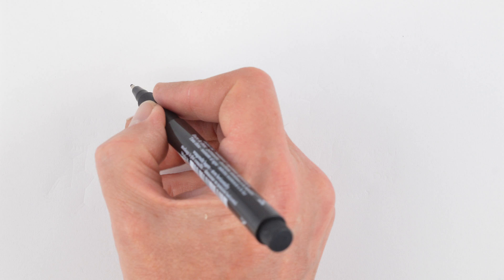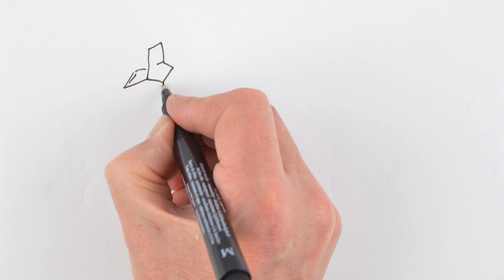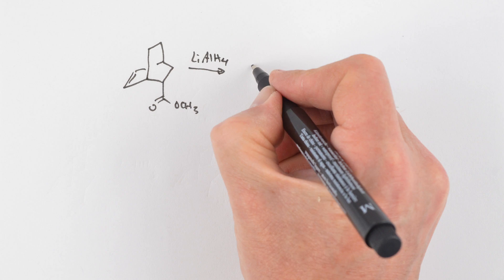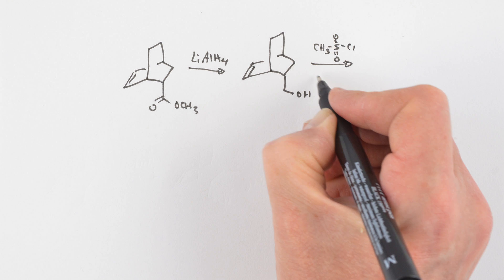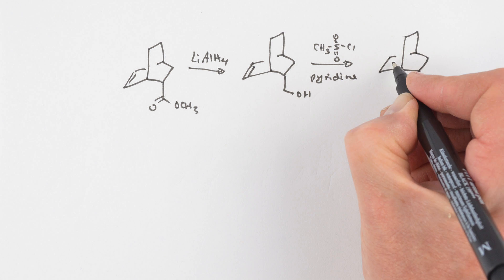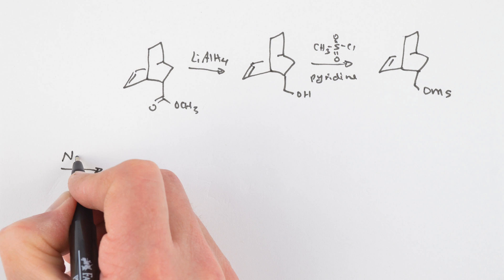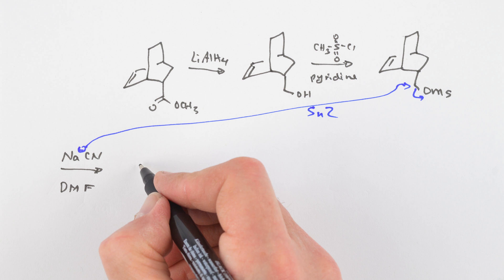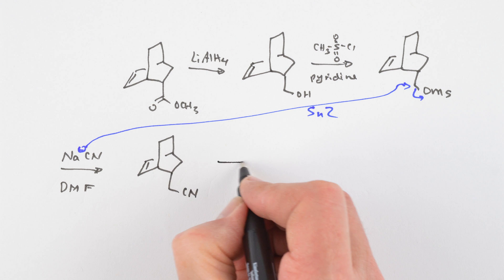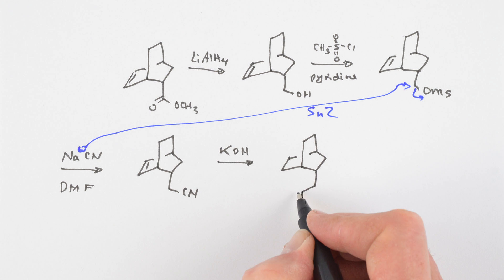Standard functional group interconversions allows us to add the single carbon by reduction of the ester with lithium aluminum hydride, converting the alcohol into the mesolate with methane sulfonyl chloride and pyridine, displacing the mesolate in an SN2 reaction with sodium cyanide, and finally hydrolysis of the nitrile in base to give the carboxylic acid.